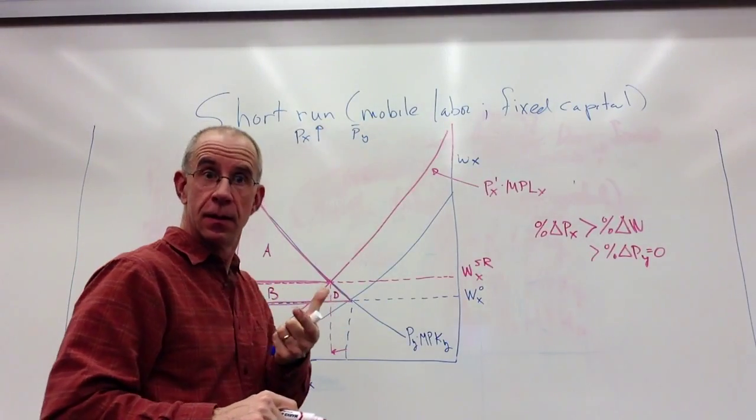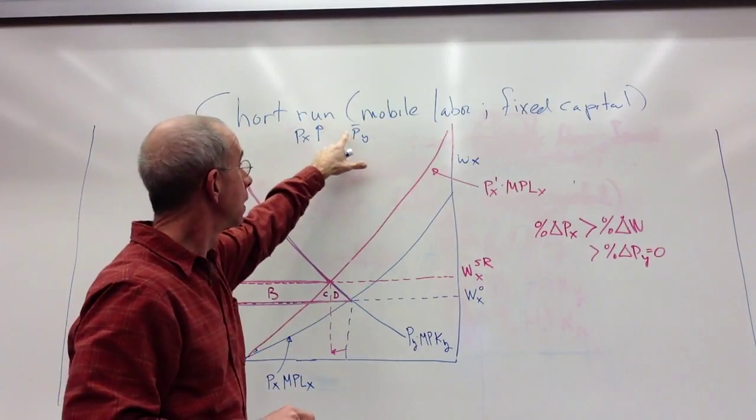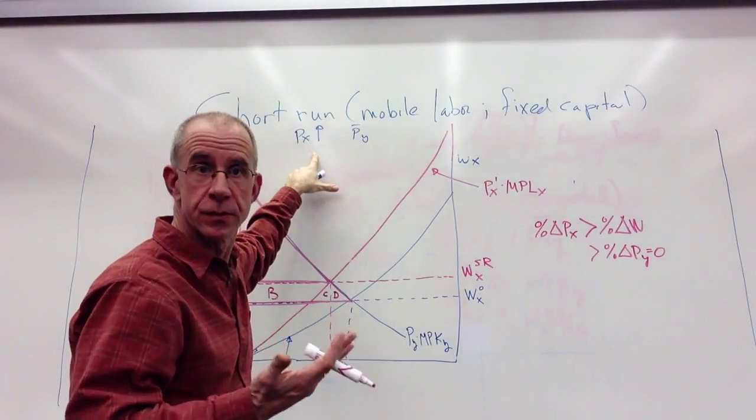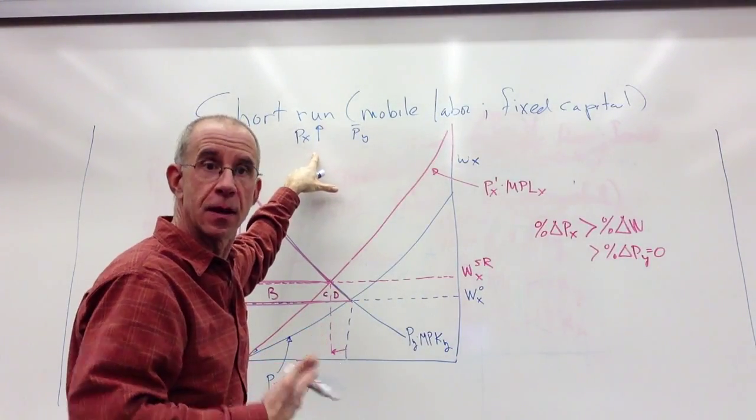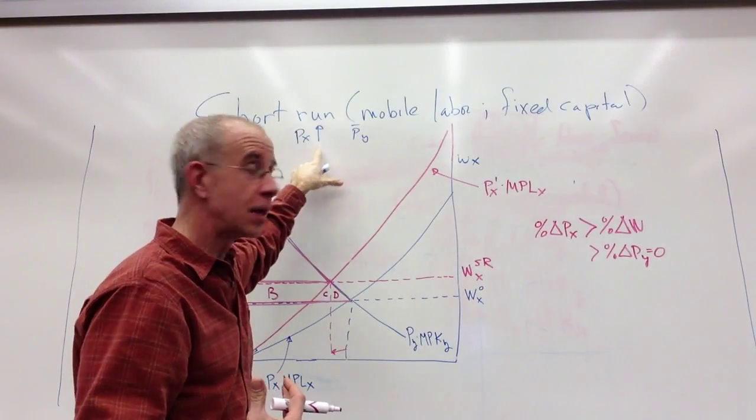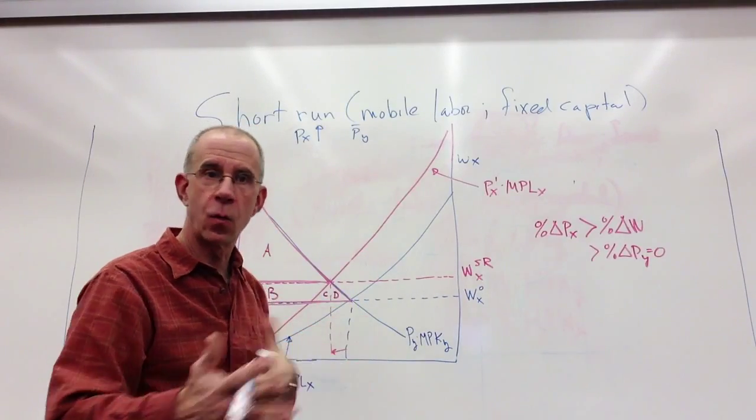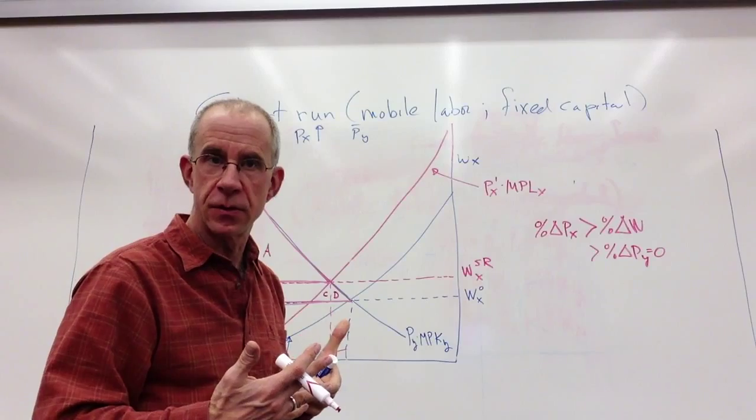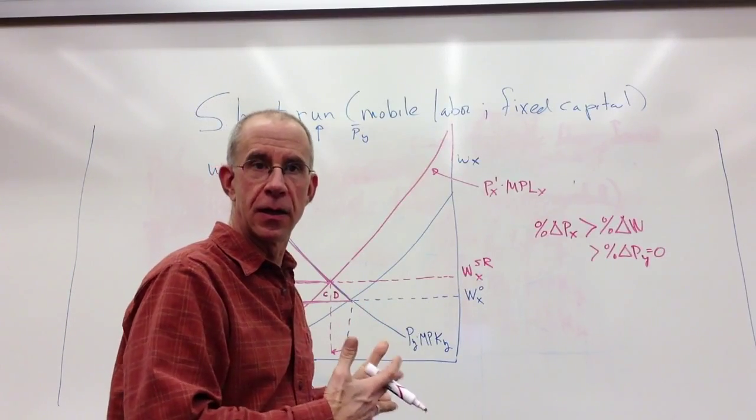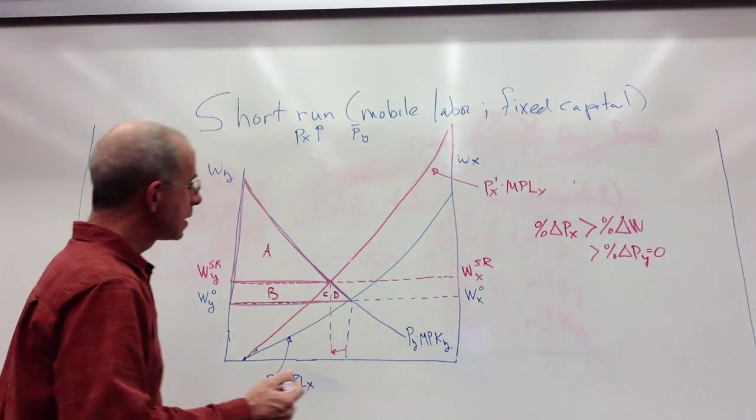So if you're a capital owner in this sector, you see an absolute drop in your income. You can buy less of the good whose price went up, of course. Because if the price went up and you've had a drop in your income, you could buy less X. But because your income has dropped, you can also buy less Y. So regardless of what the capital owners purchase, they see a reduction in their income if they're in sector Y.